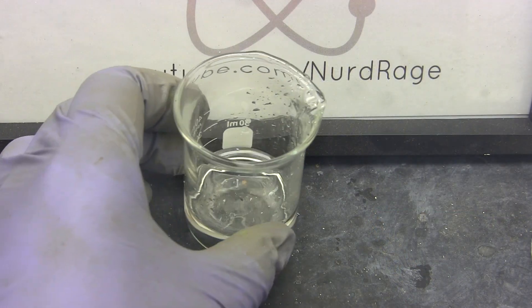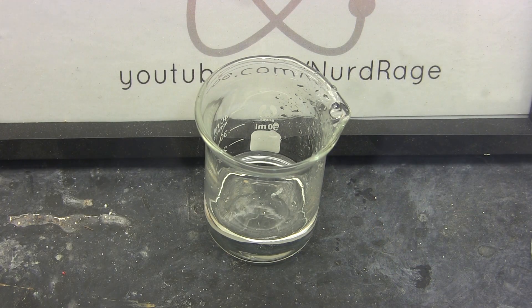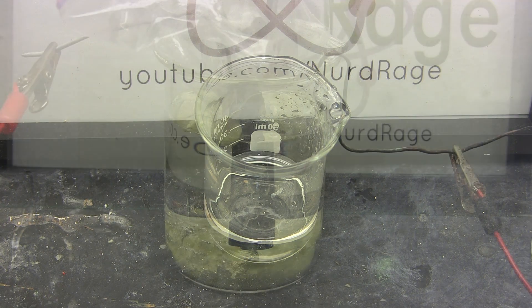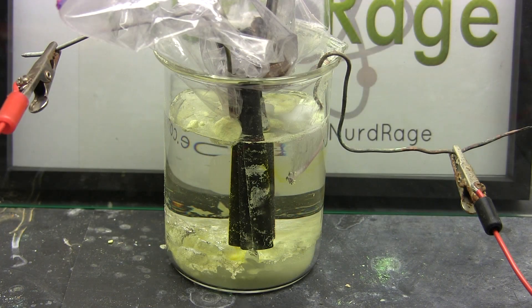The final yield from 16g of sulfur was 21g of sulfuric acid. While not very good I'm sure improving the quality of electrodes and preventing the tribromide ions from reacting with the cathode would help.